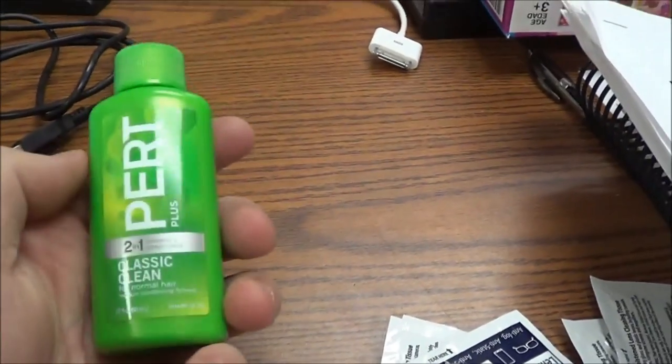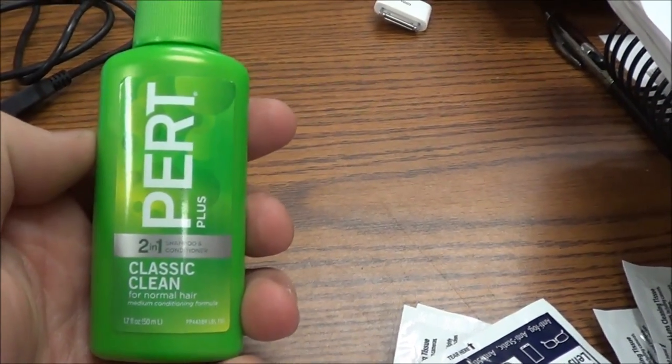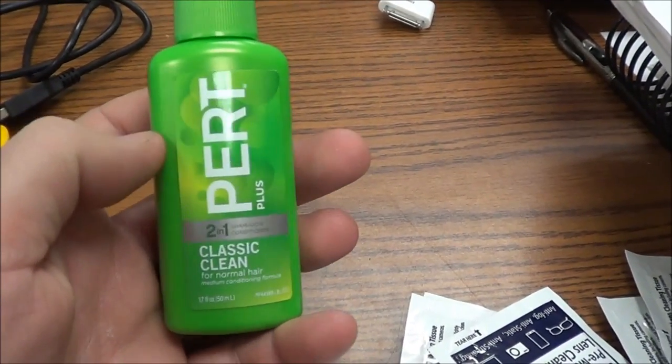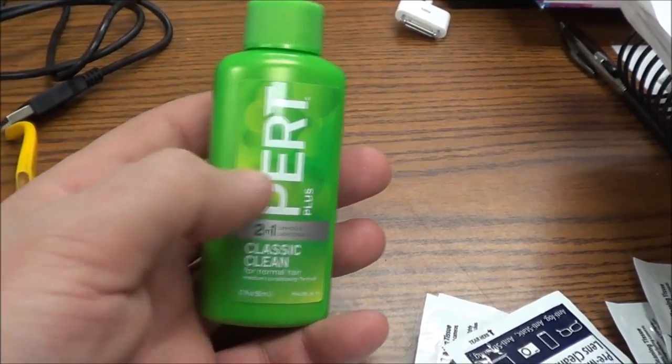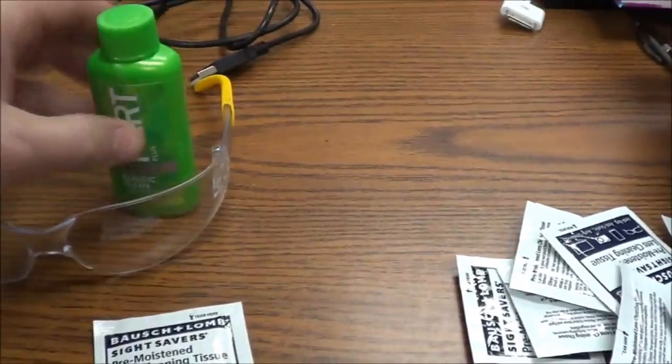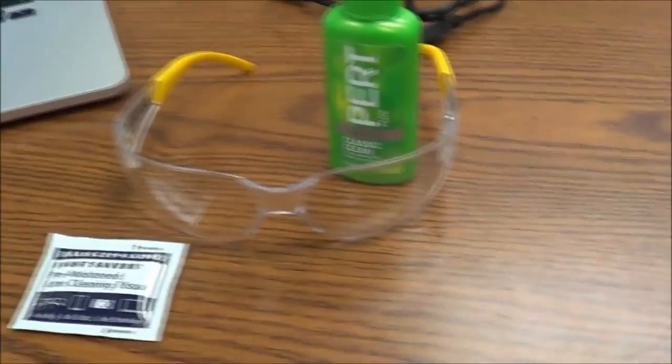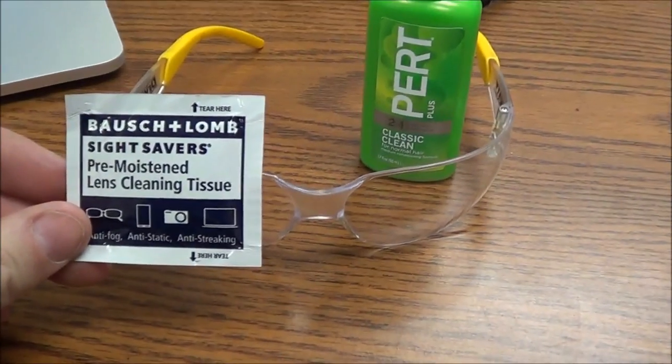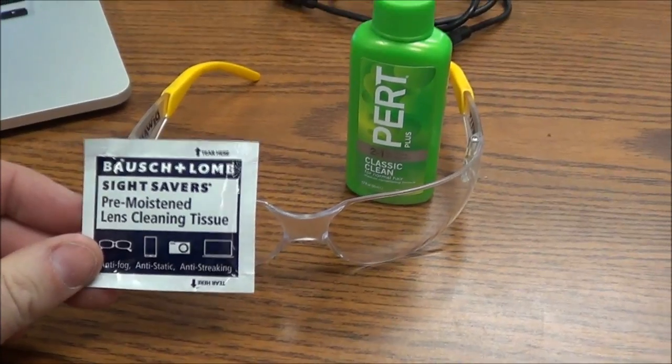So we're going to try that. And then on the internet here, I saw someone else had made a video using this product, and that it's really inexpensive, obviously, and works really well for anti-fog. So we're going to do one lens with each. I'll do the left with the Pert and the right lens, as they are on your face, with the Bausch and Lomb. Let's see what this looks like.